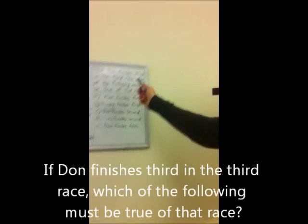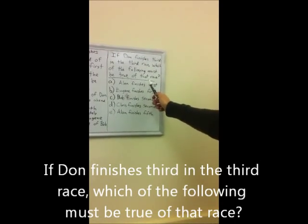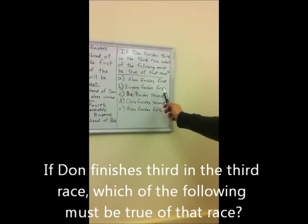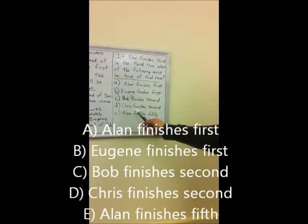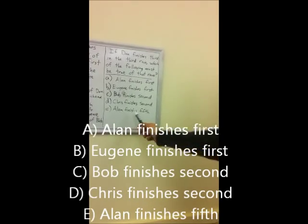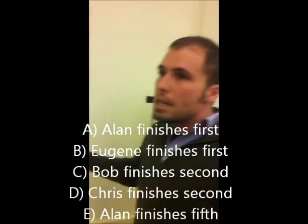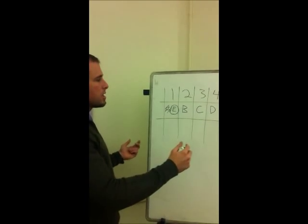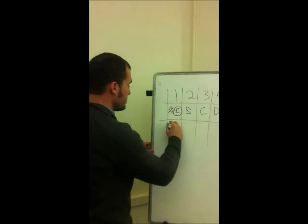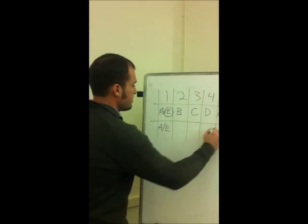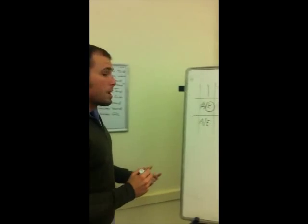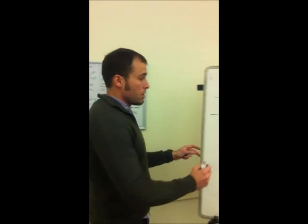If Don finishes third in the third race, which of the following must be true of that race? A: Alan finishes first. B: Eugene finishes first. C: Bob finishes second. D: Chris finishes second. Or E: Alan finishes fifth. Well, let's take a look and try diagramming this. Again, I'm going to do the A slash E thing in spots one and five. And now we know that Don finishes third.